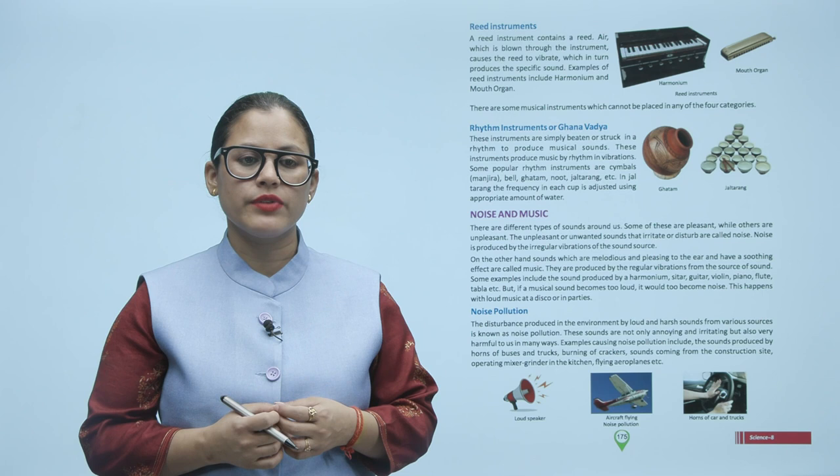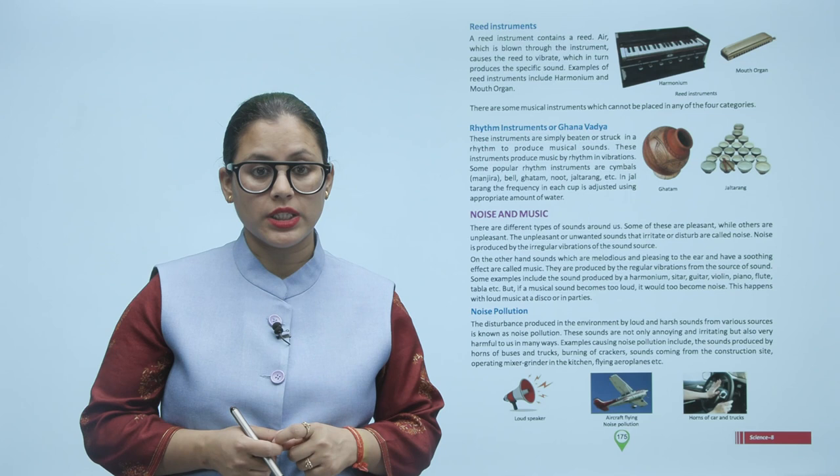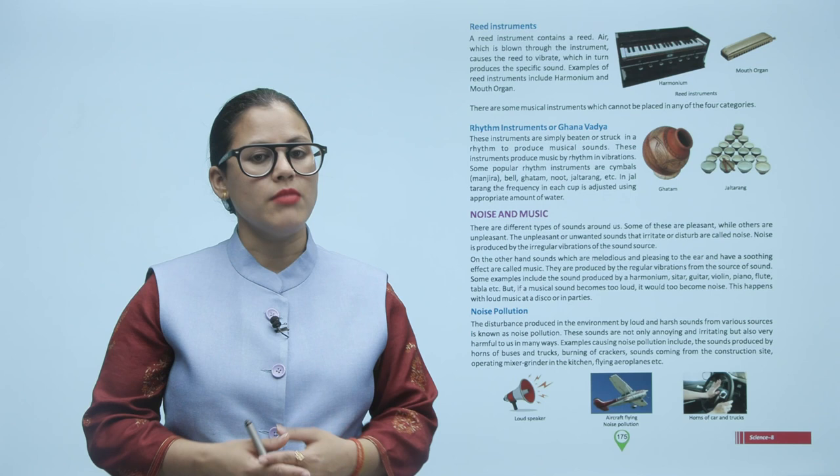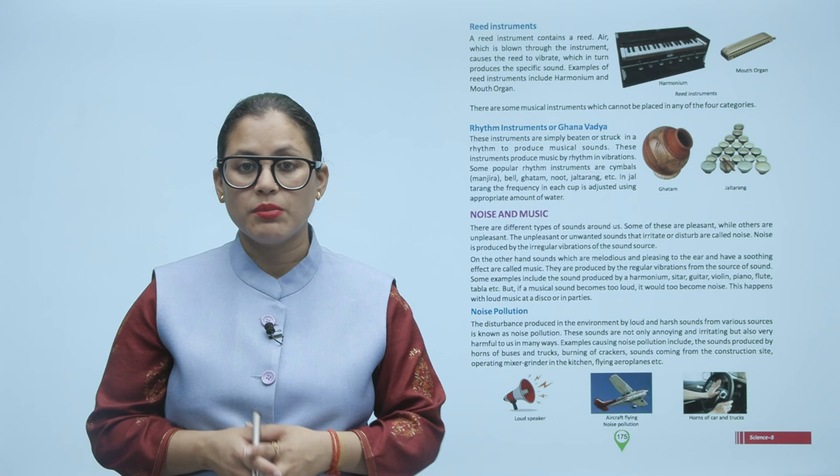Reed instruments contain a reed through which air is blown, which in turn produces a specific sound. Examples of reed instruments include harmonium and mouth organ. There are some musical instruments which cannot be placed in any of the four categories.